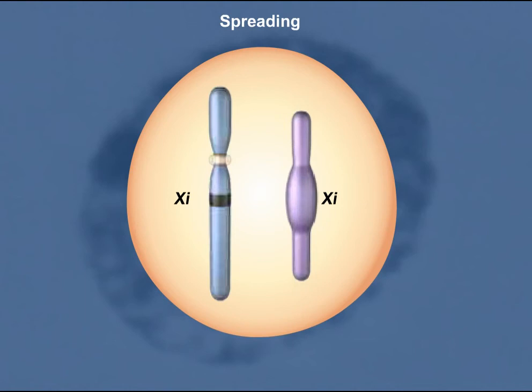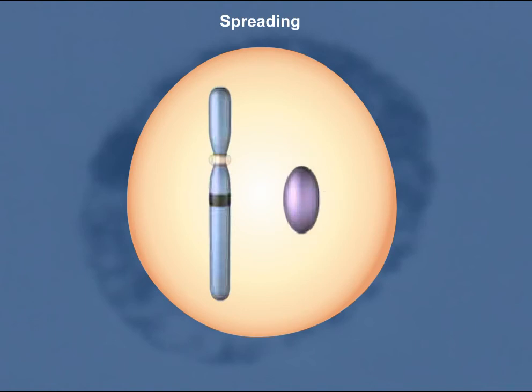This compaction begins at the XIC and progresses toward both ends until the entire X chromosome is inactivated. When spreading is finished, the compacted chromosome is called a Barr body.